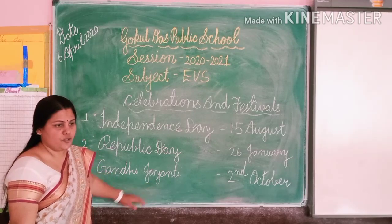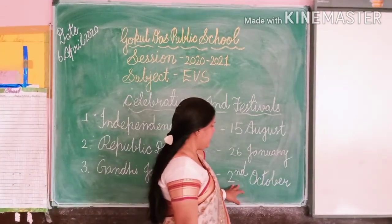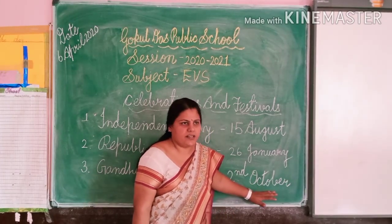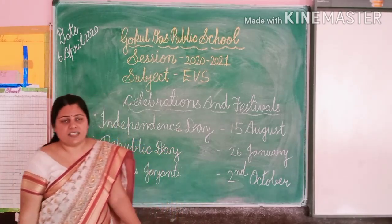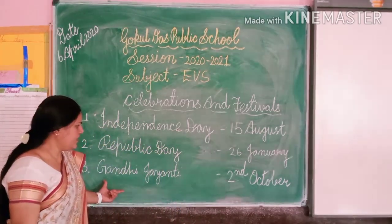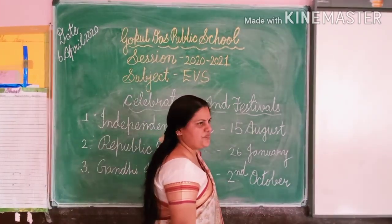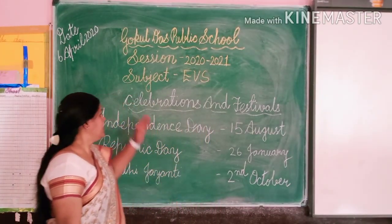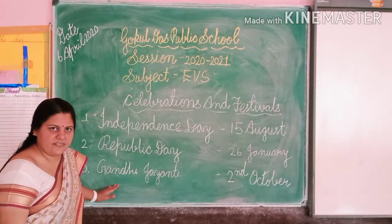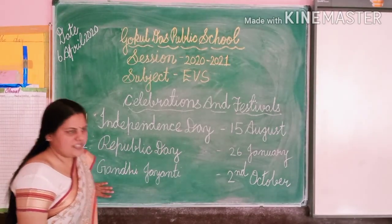Gandhi Jayanti — we celebrate Gandhi Jayanti on 2nd October. 2nd October is the birthday of Mahatma Gandhi, so on this day we all celebrate Gandhi Jayanti. These three are the national festivals.